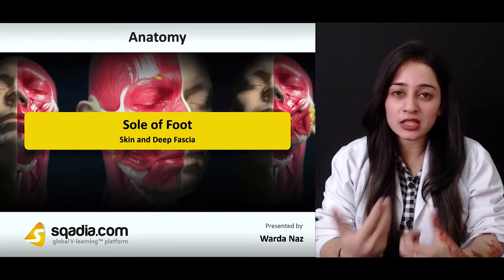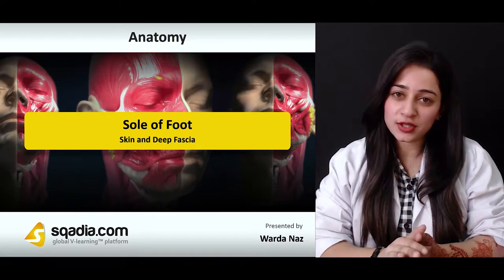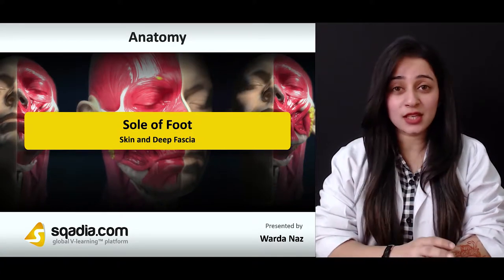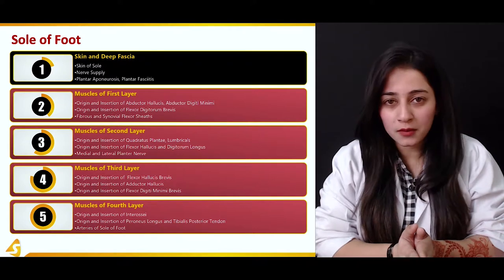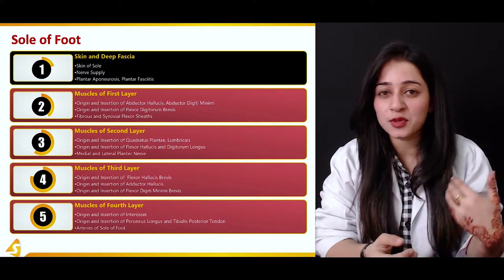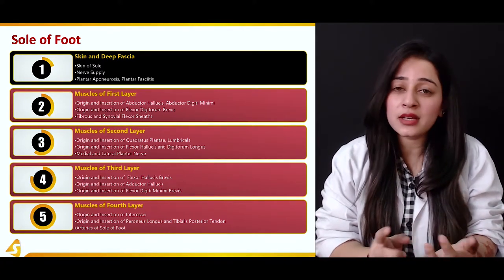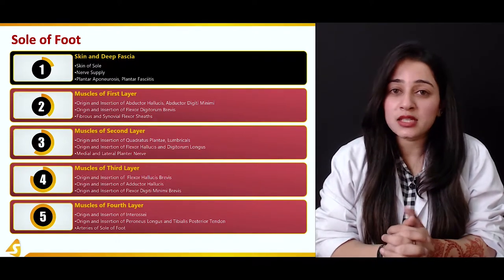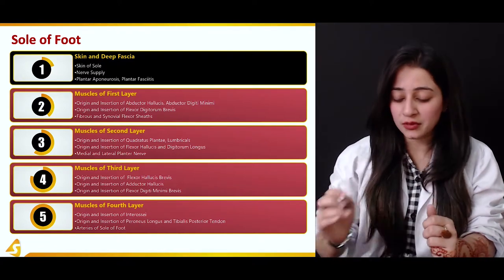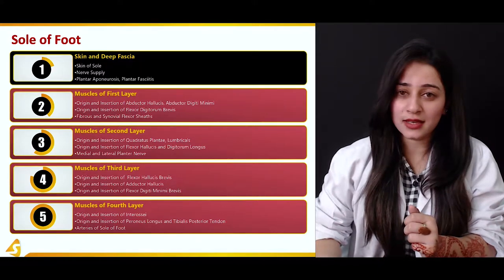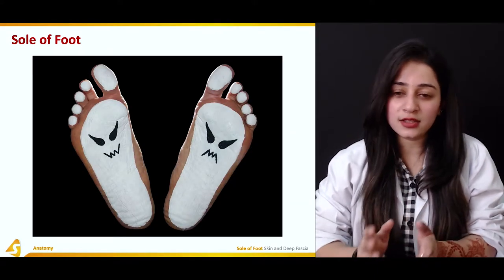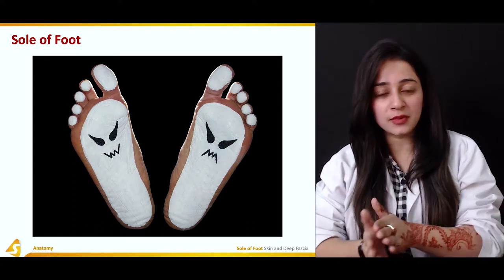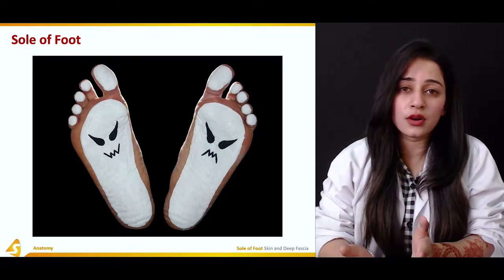The plantar aspect of your foot consists of skin and deep fascia. In this section, we'll be covering in detail about the skin of the sole, its nerve supply, the deep fascia which is also known as the plantar aponeurosis, and how it expands throughout the foot. The sole consists of four layers of muscles arranged layer by layer, which makes it a very thick structure.